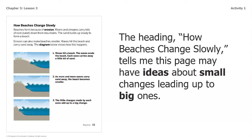On the next page, page 13, the heading says beaches change slowly, which gives me an idea it will explain small changes leading up to a big change. Beaches form because of erosion. Rivers and streams carry bits of rock and sand down from mountains. The sand builds up slowly to form a beach. Erosion can also make beaches smaller — waves hit the beach and carry sand away. Each wave carries a little bit of sand, and as more and more waves carry sand away, the beach becomes smaller. The little changes made by each wave add up to a big change.